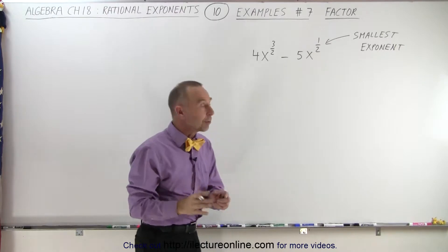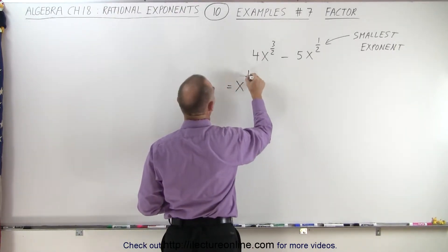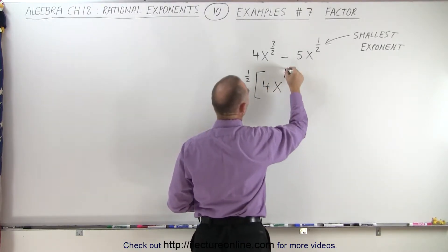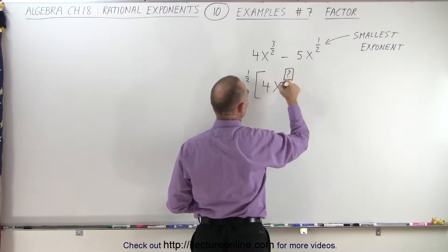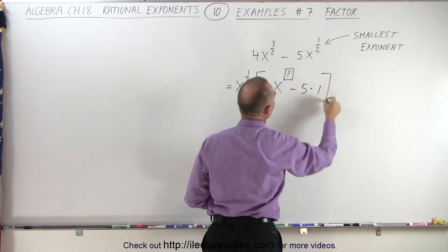Which means you're going to factor out an x to the 1 half. So this is equal to x to the 1 half times what's left, and this will be 4x to some exponent, and that's the one we need to find, minus 5 times 1.